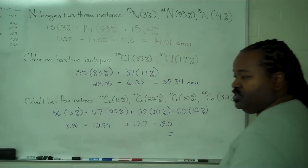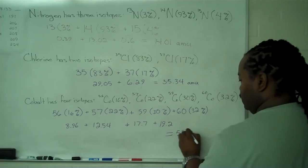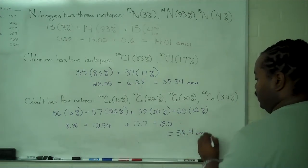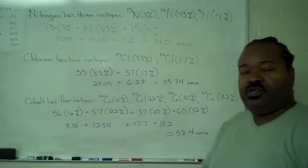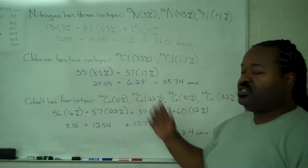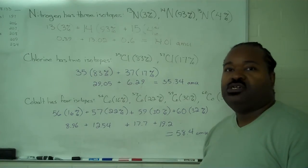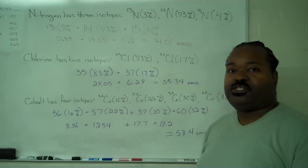So all of this then adds up to 58.4 amu. Now, if you're given the actual exact masses and the actual exact relative abundances, you could determine a value that should come very close to what you expect to find on the periodic chart.